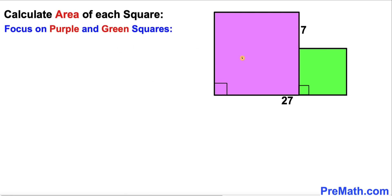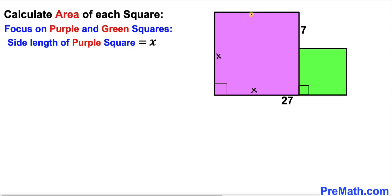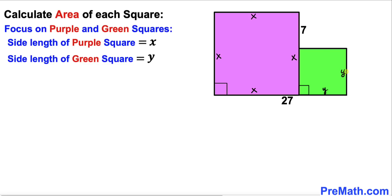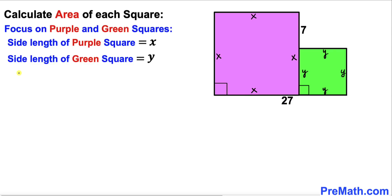Let's focus on the purple and green squares first. Let's assume the side length of the purple square is x units — so all four sides are x. Let's assume the side length of the green square is y units — so all four sides are y. The distance from one end to the other is going to be x plus y, which equals 27. So I can write x plus y equals 27.